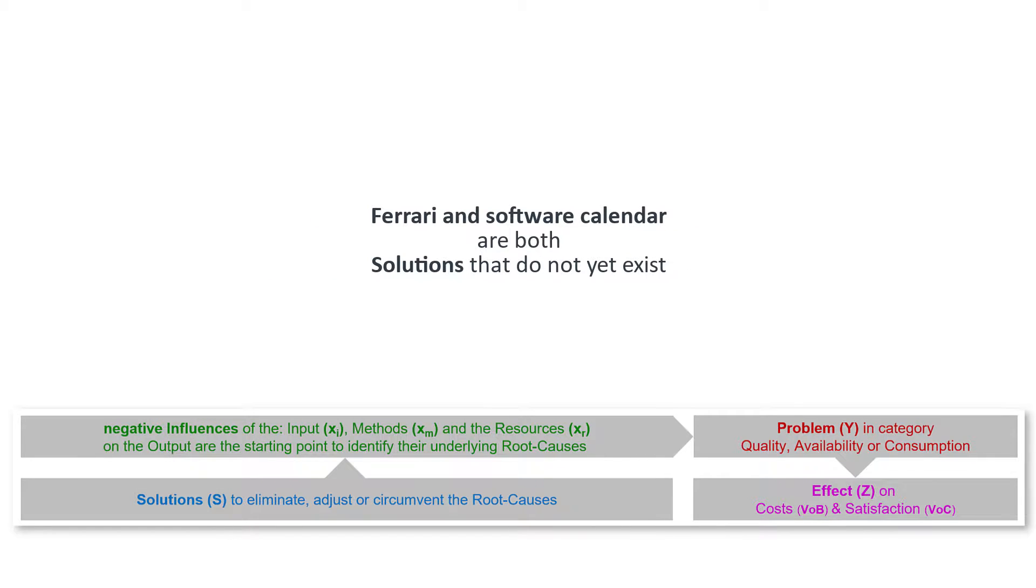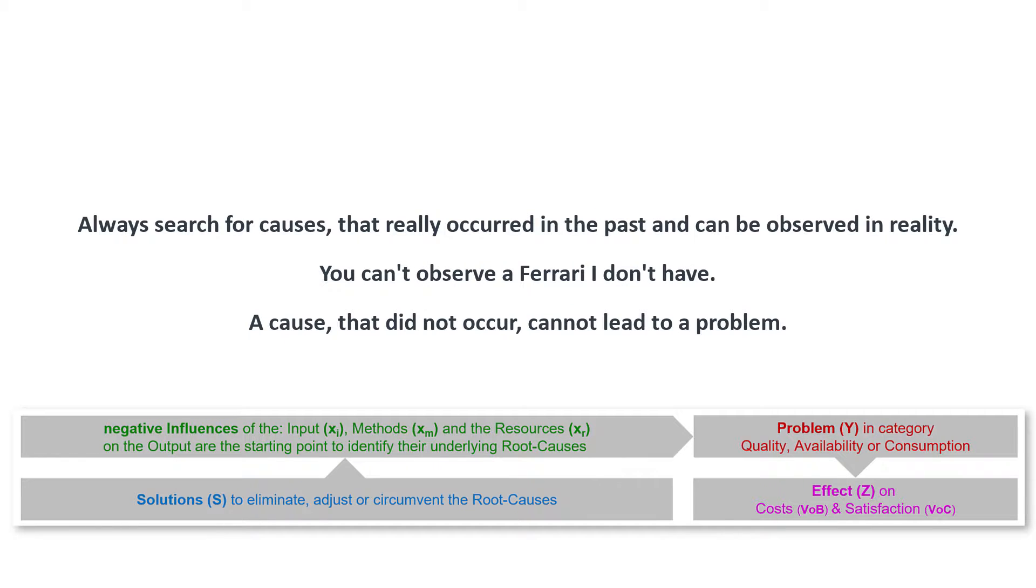The Ferrari and the software calendar are both solutions that do not yet exist. The assumptions express that a problem occurs because a solution has not yet been implemented. And that is nonsense. Instead, we look for causes that really occurred in the past and can be observed in reality.